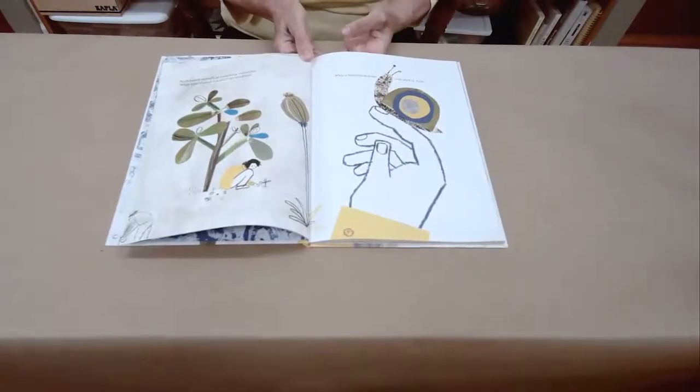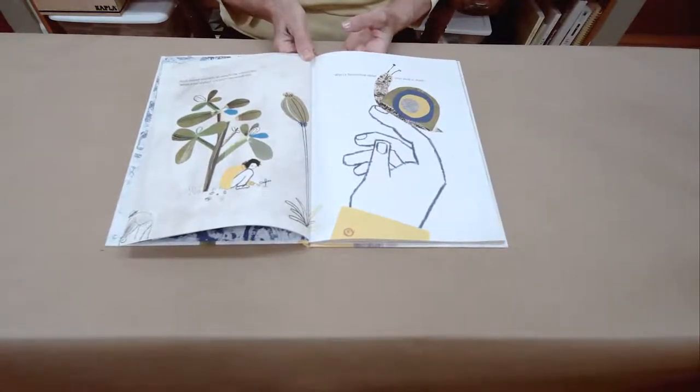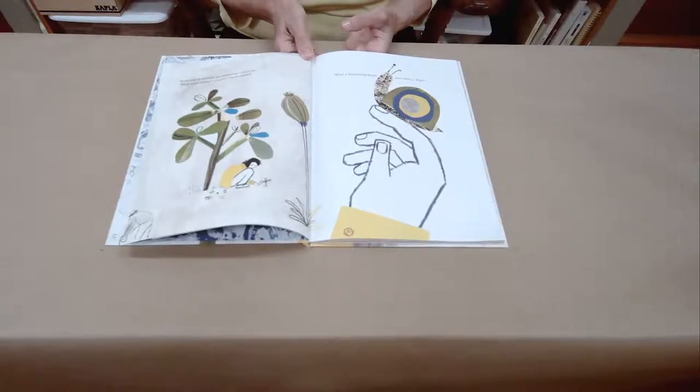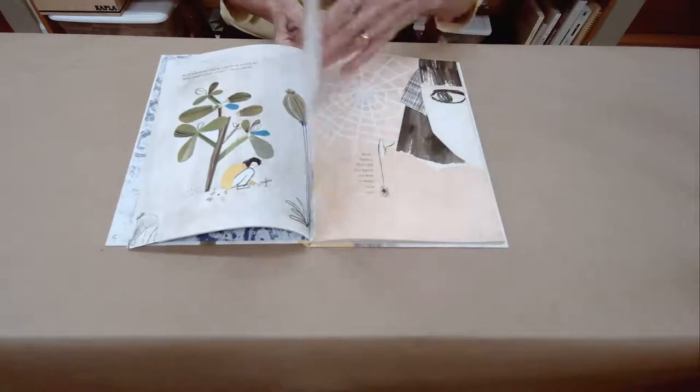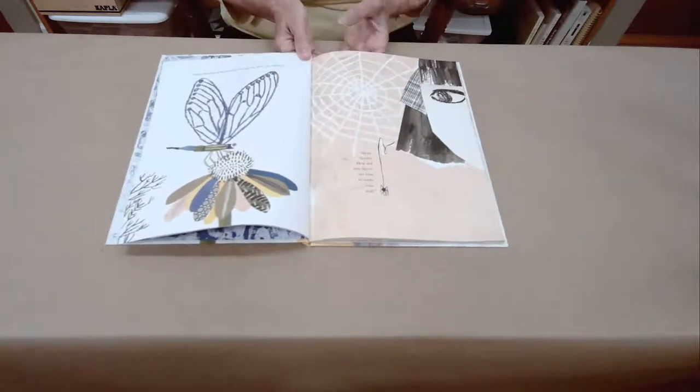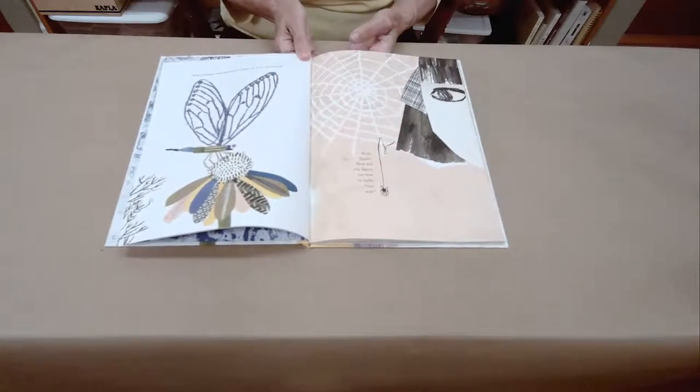Ruth looked carefully at everything around her. What kind of plant are you? She wondered. What a fascinating shape your shell is, snail. What delicate and beautiful wings you have, my friend.